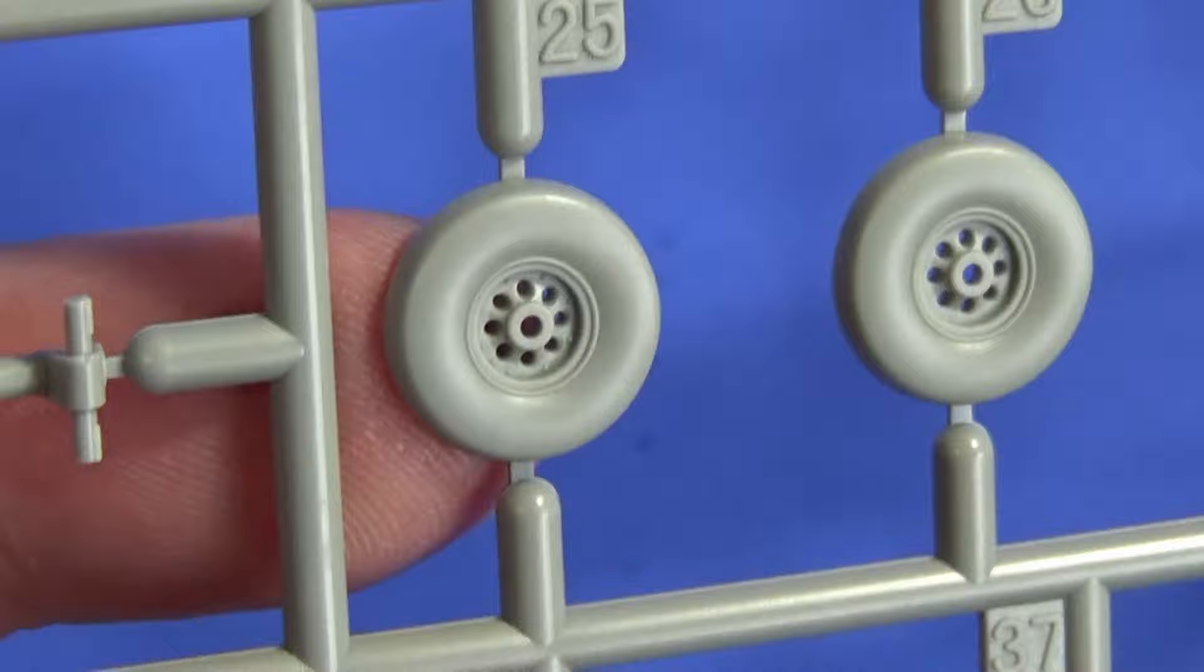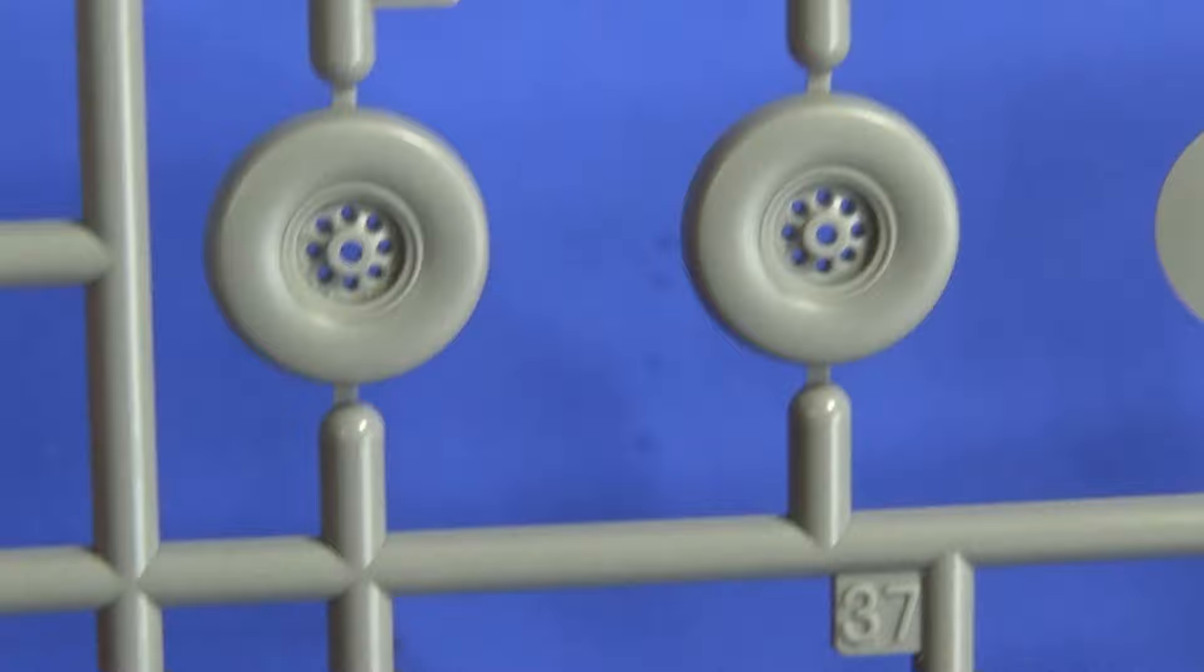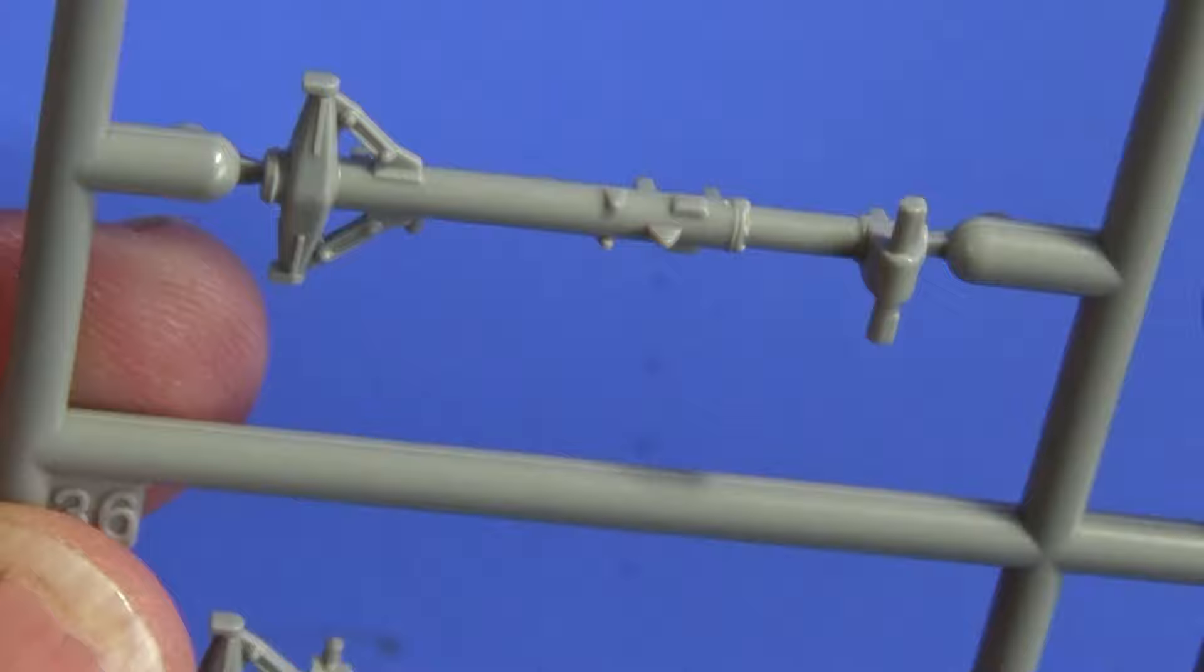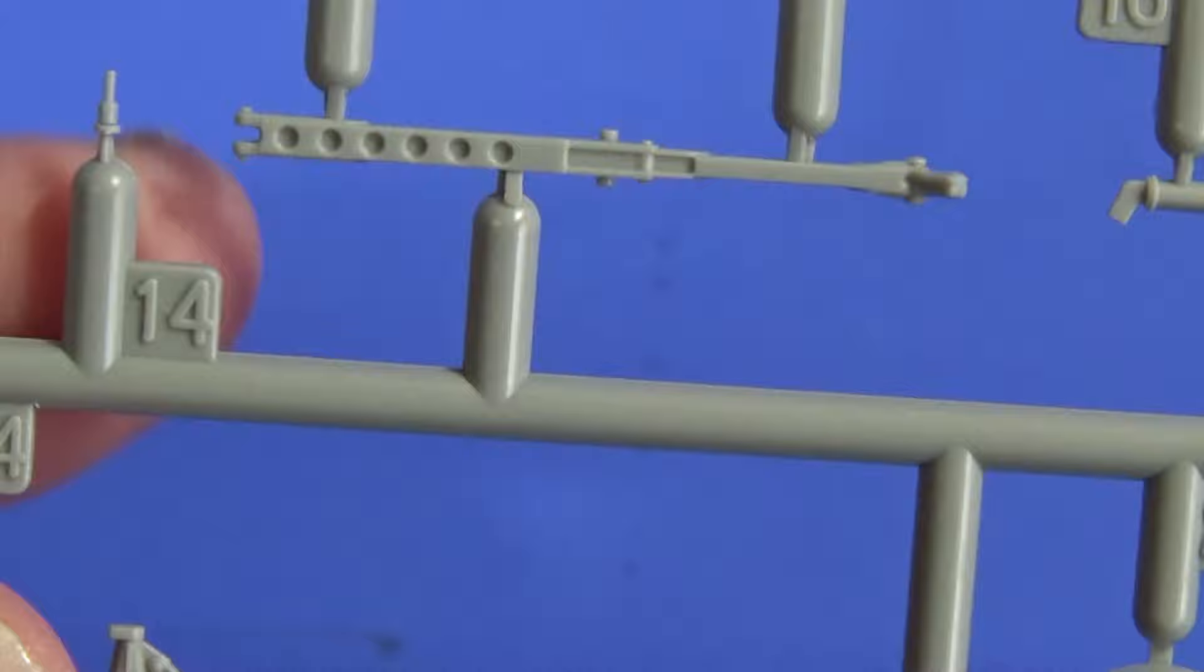And if you have a look at some of the smaller detail here, the wheels look nicely molded, very clean, very crisp, no tread marks on them, which I think is actually quite accurate. I don't think they had treads on there. The main gear legs, very nice indeed. These actuators, I'm not sure because the actuators actually do have indentations on both sides.